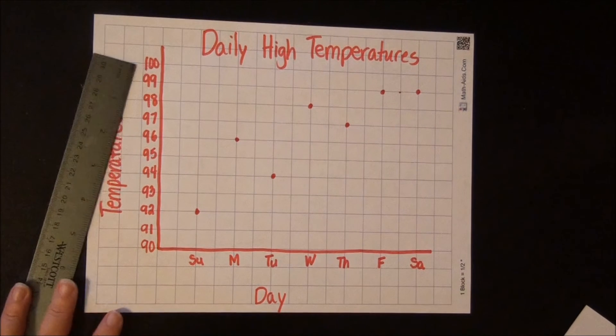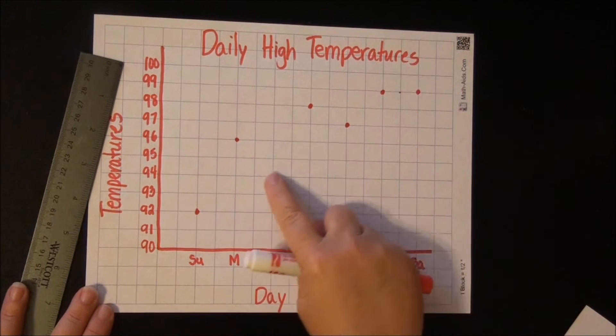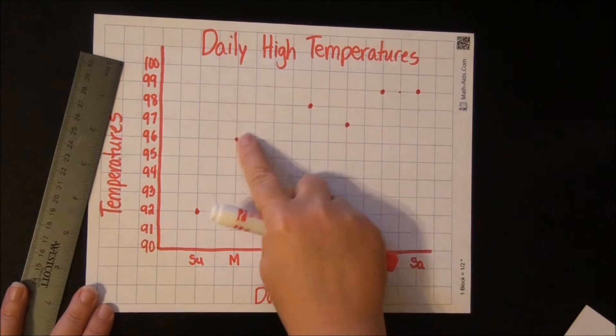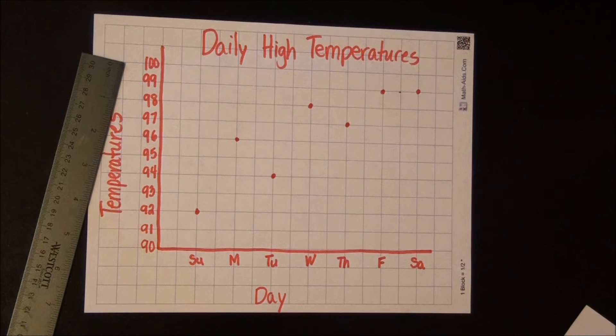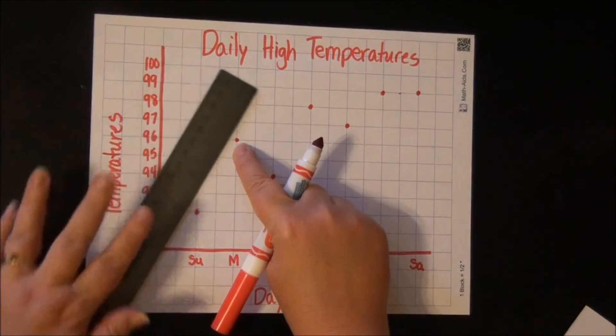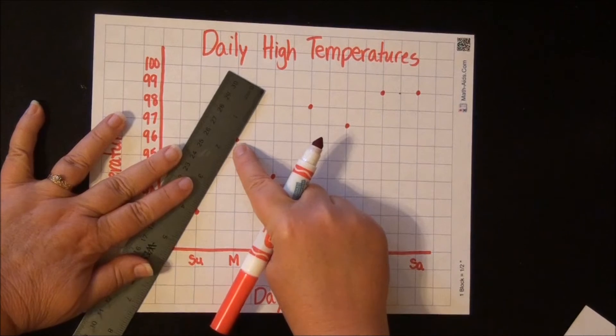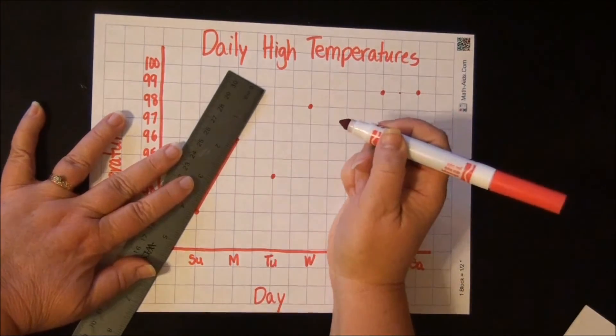A mistake that many third graders will make is that they'll just connect the dots in any order. Like they'll go, oh look, these make a line. I'll connect there. And that doesn't show you the information that you need to see. So we're going to connect the Sunday dot to the Monday dot. I'm going to put my ruler on each of the dots and draw my line in between.